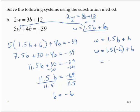w would equal negative 9 plus 6, which is negative 3.